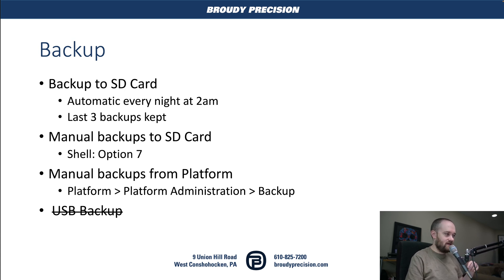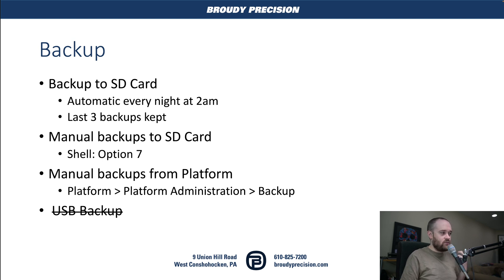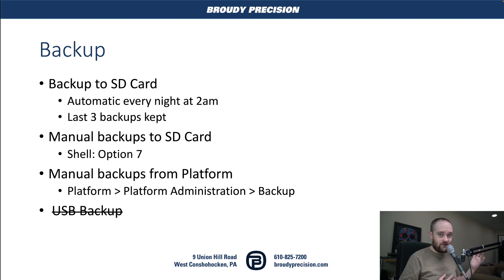The first thing that's different about the 9000 over the 8000 when it comes to backing up is that there's an automatic backup that happens every night at 2 a.m. to the SD card that's in the Jace. The station itself now runs in memory and storage that's built into the Jace, not something we had in the 8000. The SD card is now used as a backup option, giving us an automatic backup every night at 2 a.m., and we keep the last three backups on that SD card. No configuration needed — it's just automatically done.